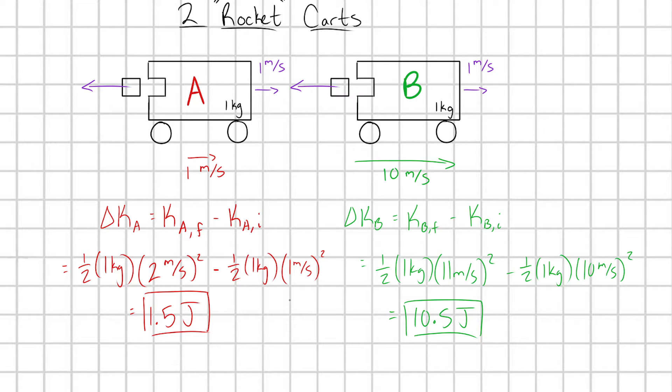Well hold on, this is a really interesting result. Even though carts A and B ejected their fuel the exact same way, simply because cart B was moving faster to begin with than cart A, it gained significantly more kinetic energy during this process. It's almost like a little magic trick. The faster you're moving, the more mechanical energy you'll get out when you burn your fuel. This phenomenon is referred to as the Oberth effect.